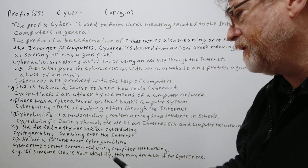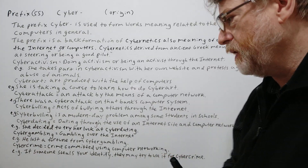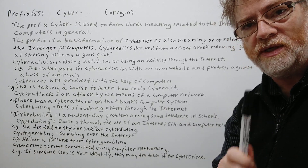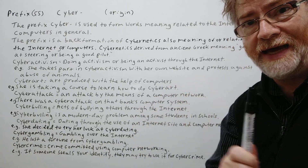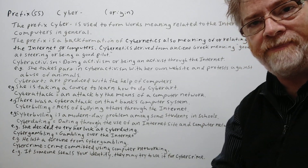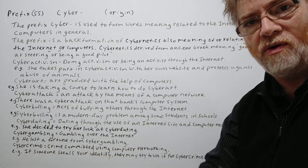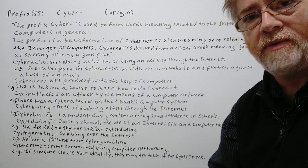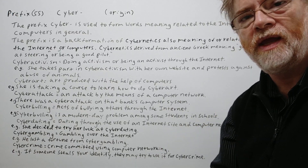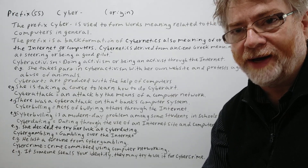And cyber crime — a crime committed using computer networking. If someone steals your identity, that's a big problem in the U.S., sometimes referred to as identity theft. They may try to use it for cyber crime — using your name and your ID number or, like in the U.S., your social security number — trying to do crime pretending to be you. I hope it was clear and informative. Thank you for your time. Bye-bye.